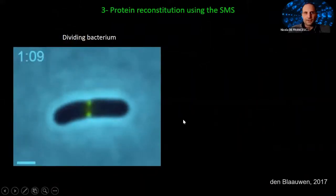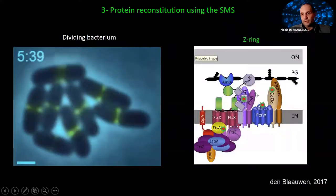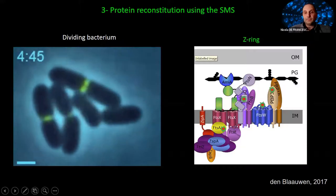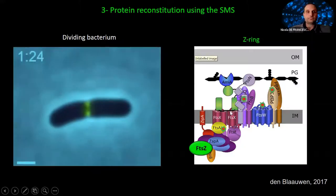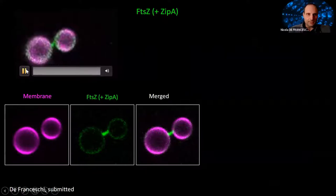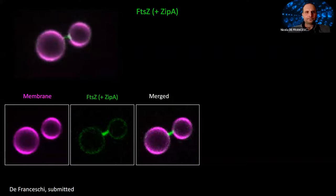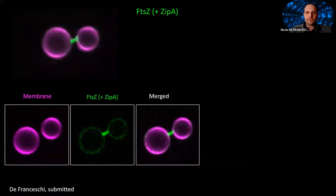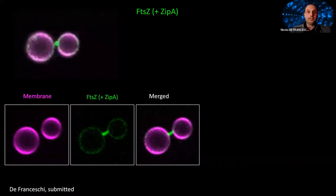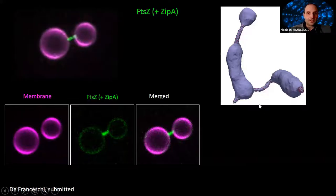In this movie, you see a dividing bacterium. The bright green ring in the middle is called the Z-ring — a structure that spans the membrane and connects the peptidoglycan machinery on the outside with the constriction ring on the inside. It is composed of hundreds of proteins, but the main structural component is the protein FtsZ. Using the SMS, it is rather easy to reconstitute FtsZ at the neck of a dumbbell. We also use the protein ZipA, which is part of the Z-ring, as an anchor to link FtsZ to the membrane. We notice that FtsZ induces the formation of very long necks, indicating it might actively generate negative curvature.